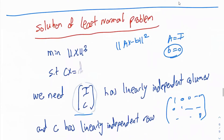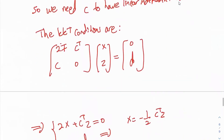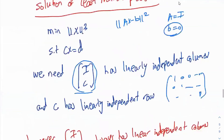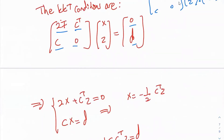Now, D is as given and B is set to 0. Write the optimality condition: 2A transpose A becomes 2I, C transpose remains C transpose, C remains C, 0 is 0, and A transpose B is 0 since B is 0. Multiplying out: 2I times X gives 2X plus C transpose Z equal to 0, and CX equal to D.